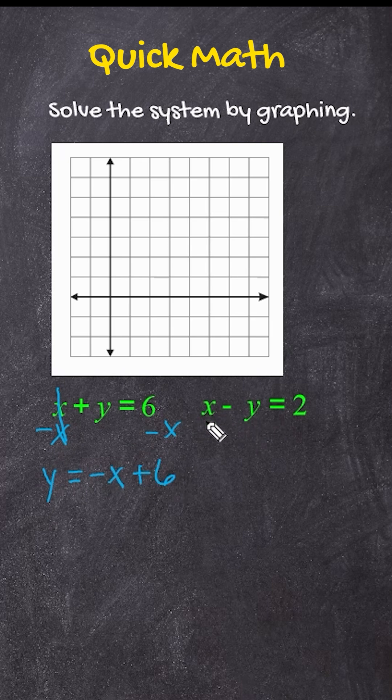And we do the same thing on the other side. We're going to move this x to the other side by subtraction. And that's going to leave us with negative y is equal to negative x plus 2. And now we've got to get rid of that negative 1 by dividing both sides by negative 1. So that is going to leave us with positive y is equal to positive 1x minus 2.